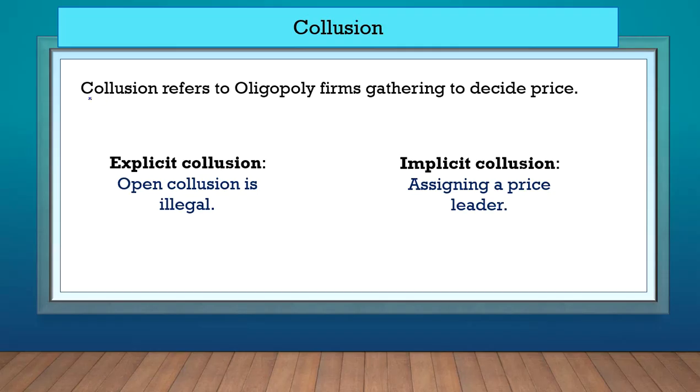Collusion is when these firms get together to decide what the price should be. Explicit collusion is illegal. So by law, these firms cannot get together to decide price. Explicit collusion is when they do it openly. They don't hide it. So that's illegal.